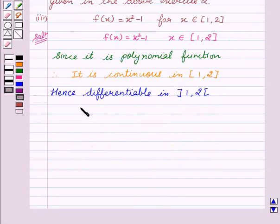Now, we will find f(1) which is equal to 1 minus 1 equal to 0, f(2) equal to 4 minus 1 equal to 3.